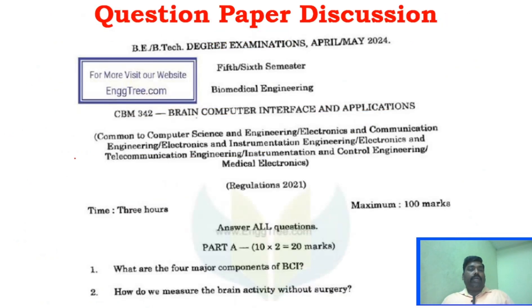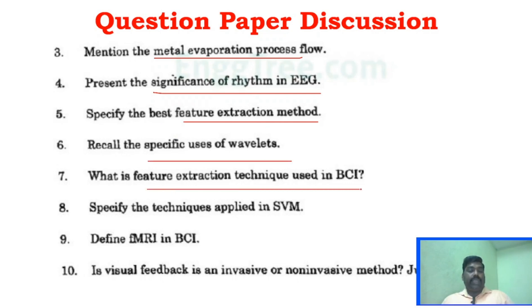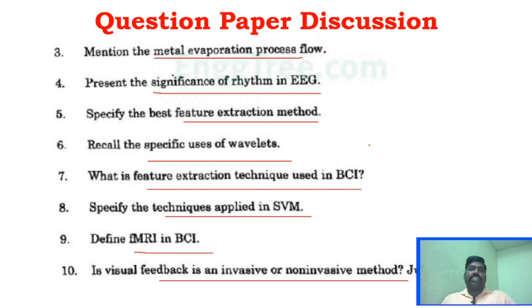Now for question paper discussion. I have taken the April-May 2024 question paper. In Part A, the questions include: major components of BCI, brain activity without surgery, metal evaporation process flow, significance of rhythm in EEG, feature extraction methods, specific uses of wavelets, feature extraction methods used in BCI, techniques applied in SVM, fMRI in BCI, and whether visual feedback is an invasive or non-invasive method.